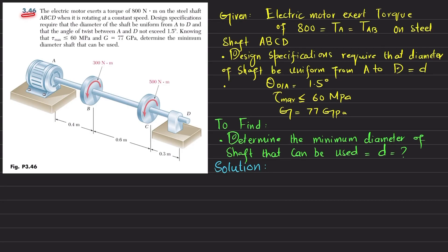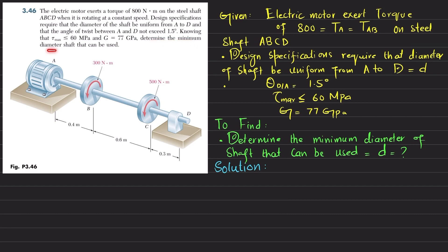Welcome back. Problem 3.46, taken from Mechanics of Materials by Beer & Johnston, 6th edition. An electric motor exerts a torque of 800 newton-meters on steel shaft ABCD when rotating at constant speed. Design specifications require the shaft diameter be uniform from A to D, and the angle of twist between A and D must not exceed 1.5 degrees. This is shaft ABCD with a motor exerting 800 N·m torque.